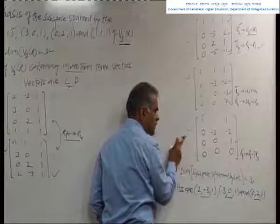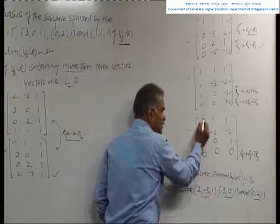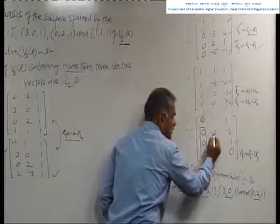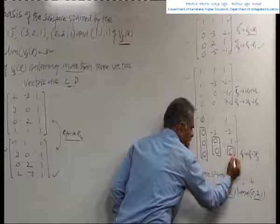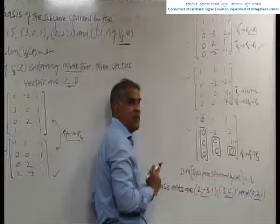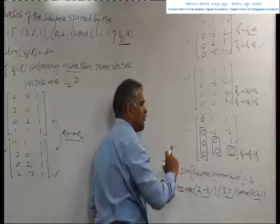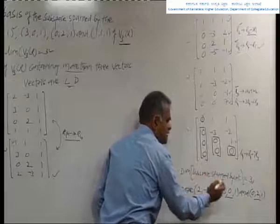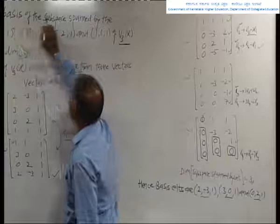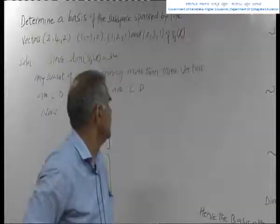This is the final echelon form. The first row's first column element is unity with zeros below, the second row's second column is non-zero with zeros below, and the third row's third column element is unity. The last row is all zeros. We count the non-zero rows: first, second, and third rows are non-zero. Therefore, the dimension of the subspace spanned by the vectors is 3, and the basis consists of 3 vectors — the 3 non-zero rows.